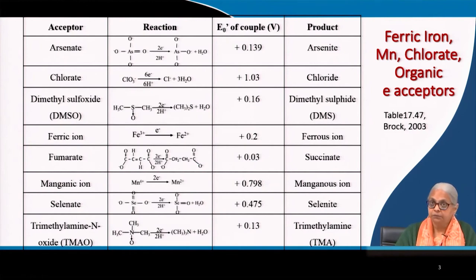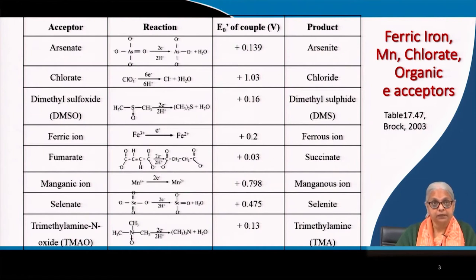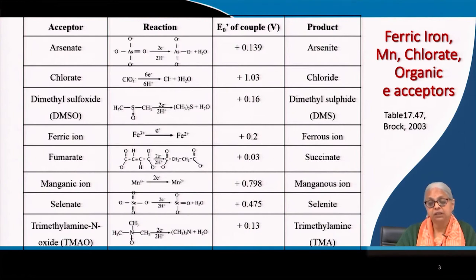Ferric iron, Fe3+, can be reduced to Fe2+ under anaerobic conditions. Dimethyl sulfoxide (DMSO) can be converted to dimethyl sulfide. Arsenate can be converted to arsenide. TMAO, trimethylamine N-oxide, can be converted to trimethylamine. Fumarate can be converted to succinate.